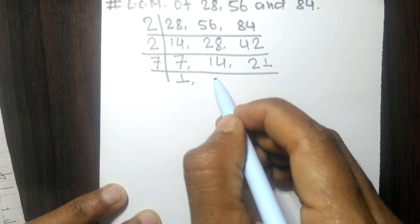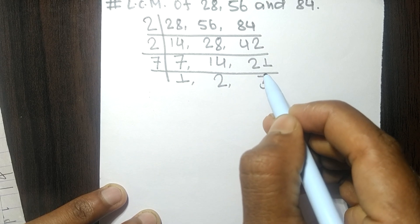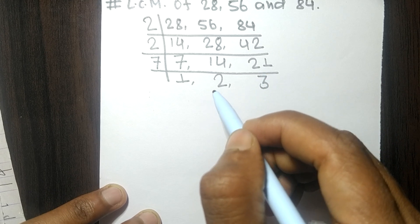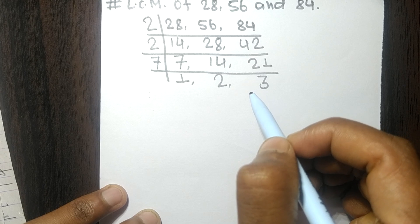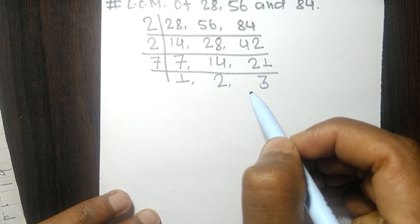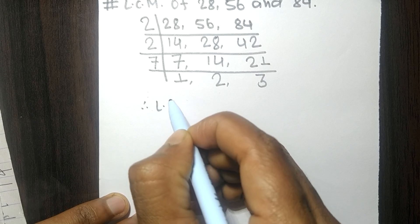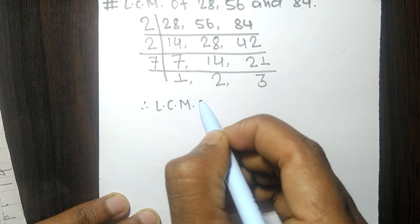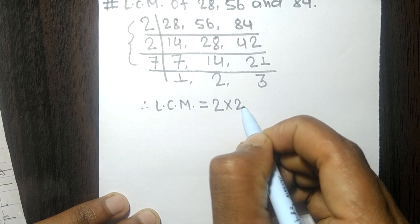Now the numbers 1, 2, and 3 are not exactly divisible by the same number. Therefore, the LCM is equal to, from this side, 2 times 2 times 7.